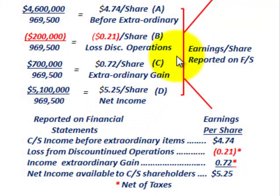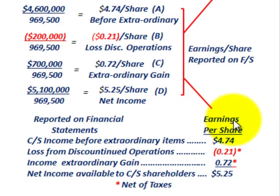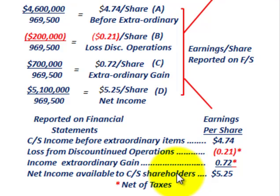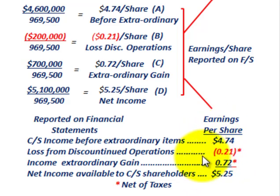All these earnings per share figures would be reported in our financial statements, set up in a note or section showing EPS. Common stock income before extraordinary items: $4.74. Loss from discontinued operations: $0.21. Extraordinary gain: $0.72 per share. And net income available to common stock shareholders — $4.74 minus $0.21 plus $0.72 — equals $5.25 per share as it should be reported in the financial statements.